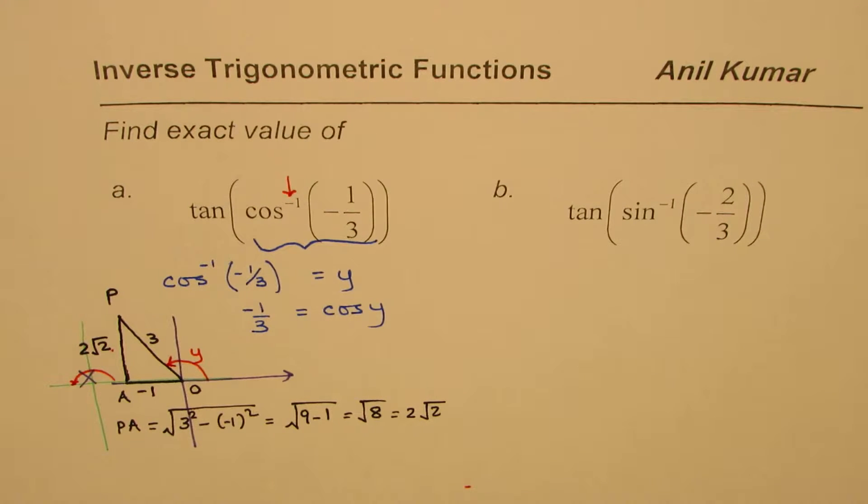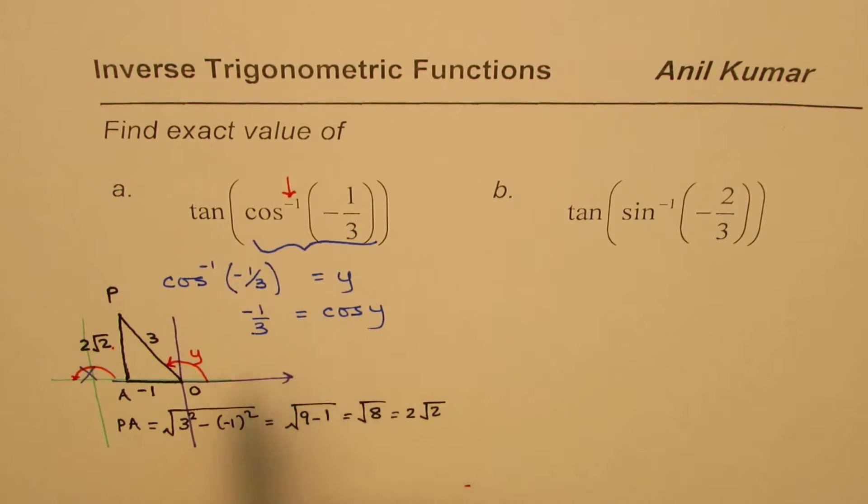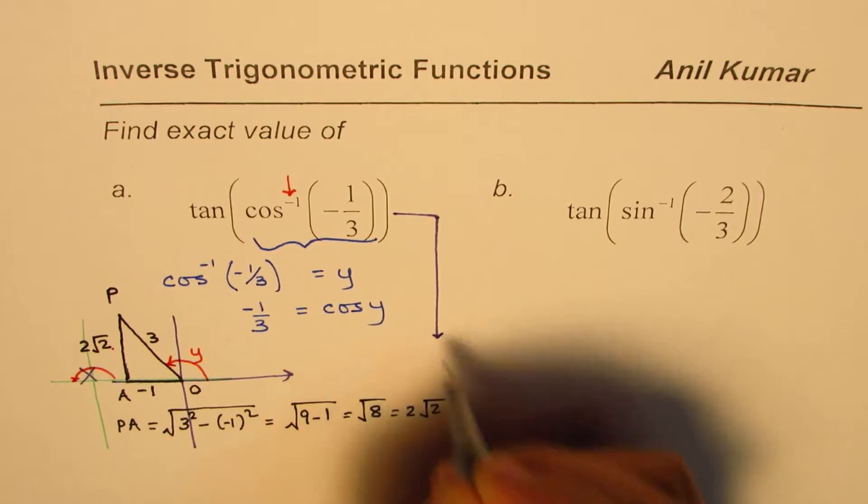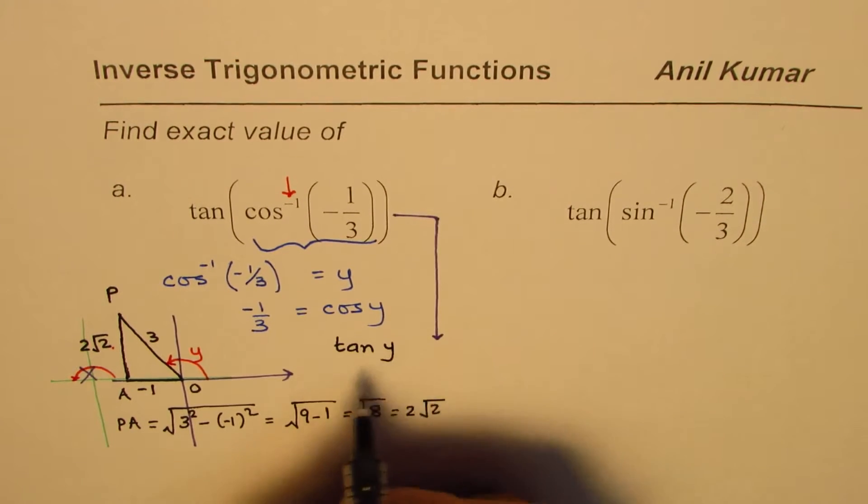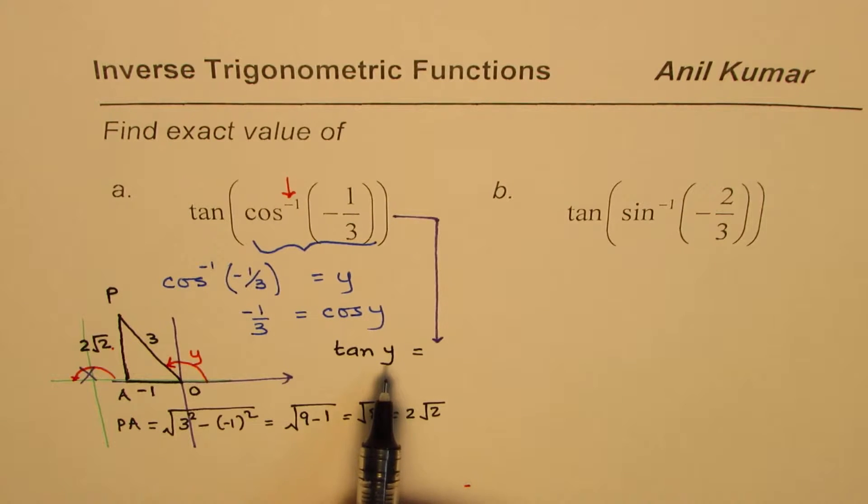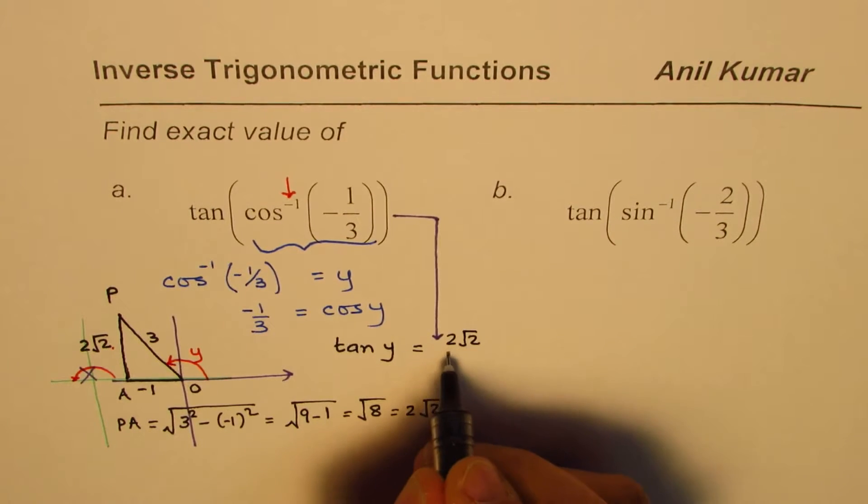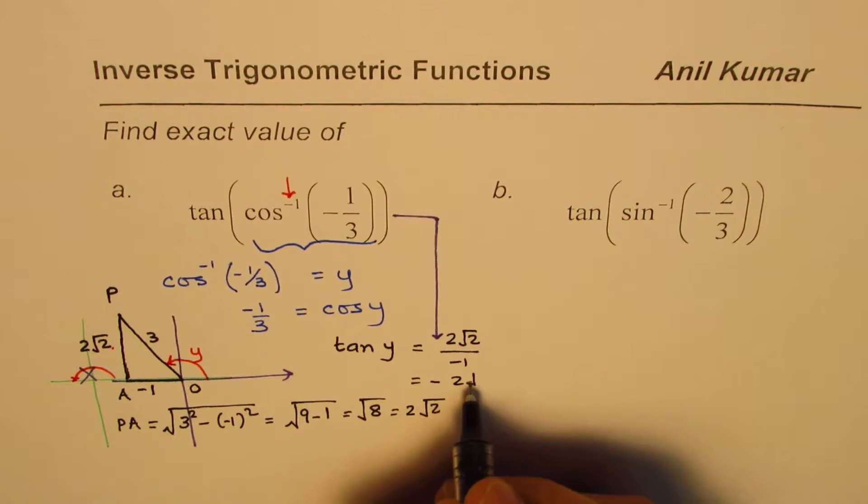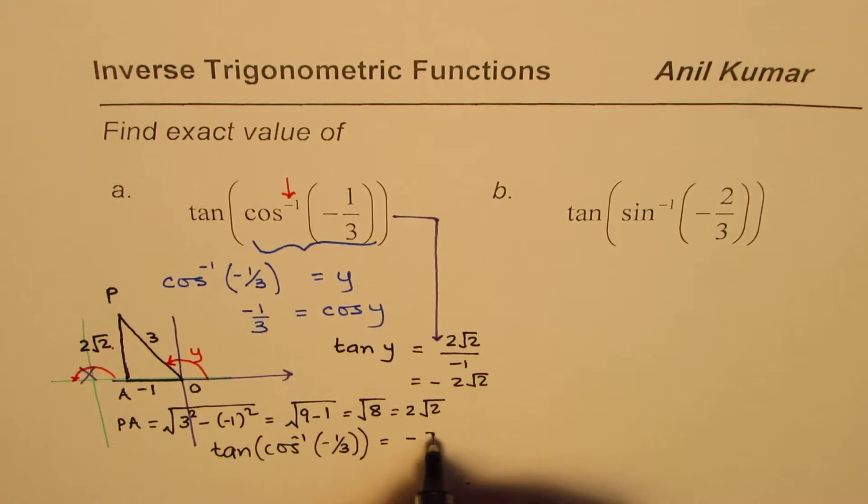So that is cos(y). So we have our triangle, and now we know tan(cos^(-1) of all this) could be written as y. So this expression itself could now be written as tan(y), the same angle, the same triangle. From this triangle, you can read what tan(y) is. Tan is opposite over adjacent, so you get 2√2 over -1, which is -2√2.